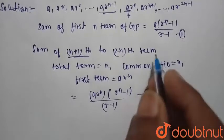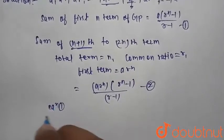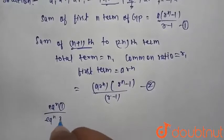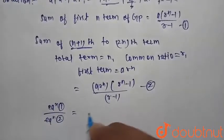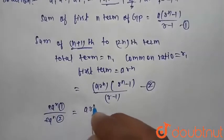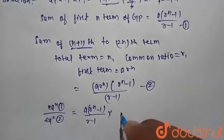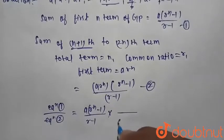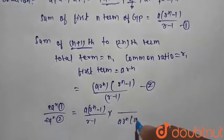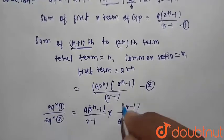So ratio of equation 1 divided by equation 2, that is equal to a into r raise to power n minus 1 divided by r minus 1, multiplied by r minus 1 divided by ar raise to power n into r raise to power n minus 1.